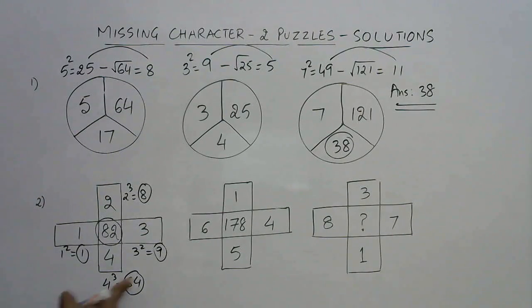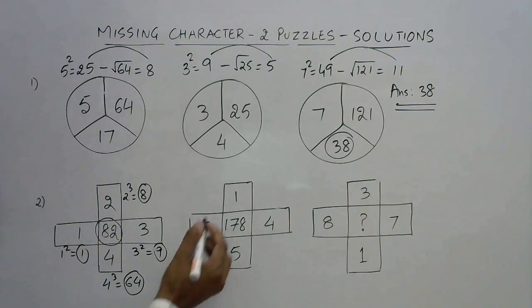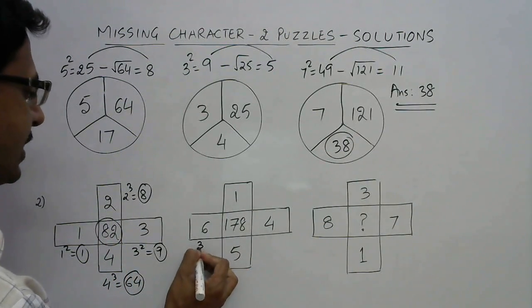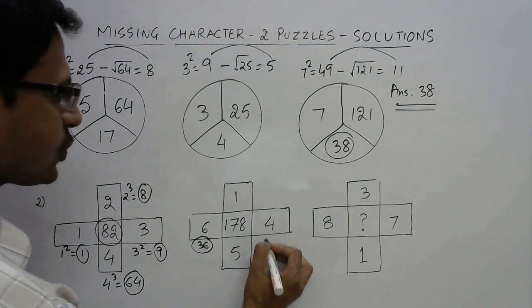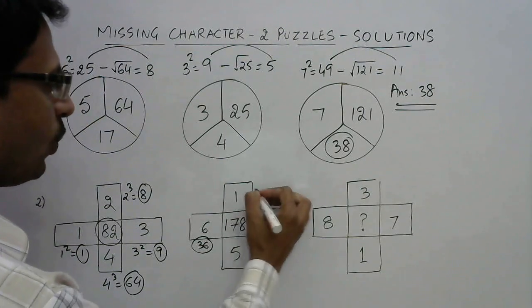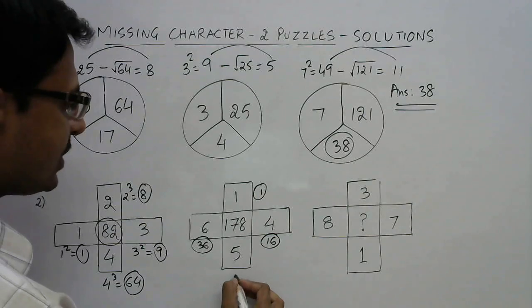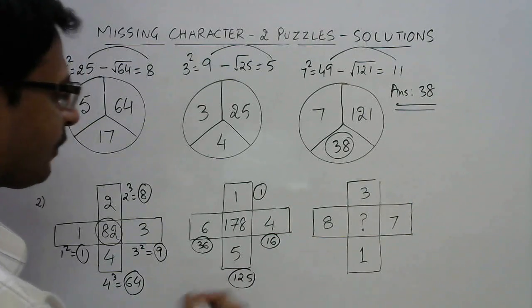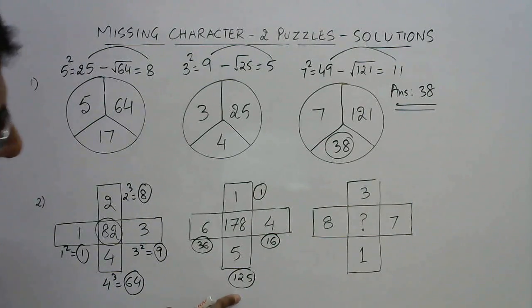And take the cubes of the numbers at the top and at the bottom, and add the four results to get to the number at the center. Let's apply it here: 6 square is 36, 4 square is 16, 1 cube is 1, and 5 cube is 125.